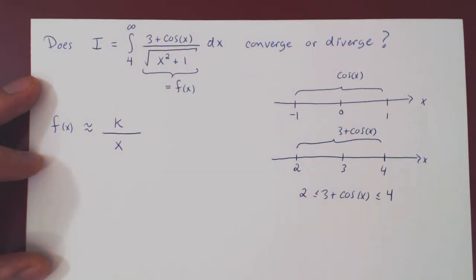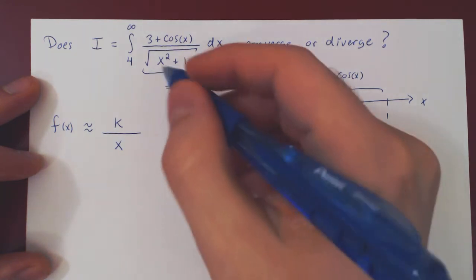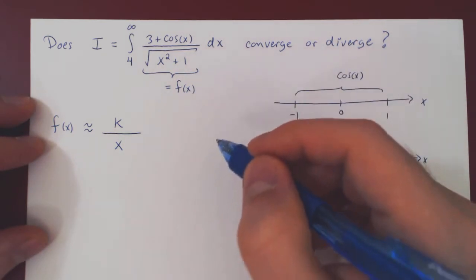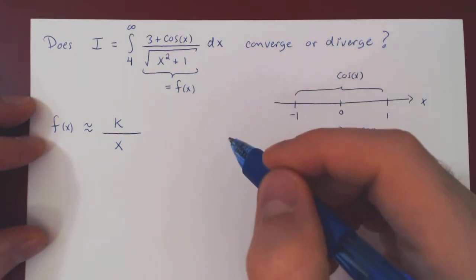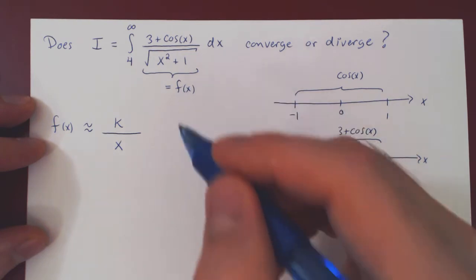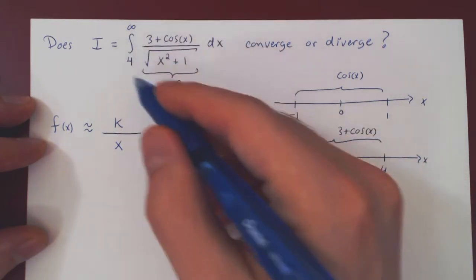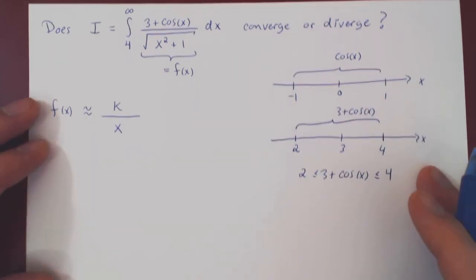So we want to go here in the opposite direction that we did in our previous video. We bounded f above in our previous video by a convergent integral. We now want to bound f below by a function that will give us a divergent integral.